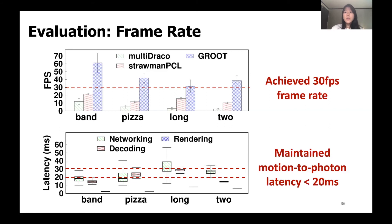Next, the latency breakdown results show minimum, average, and maximum values for each component. Decoding is no longer the bottleneck, and the rendering latency remains well below the motion to photon latency of 20 milliseconds. These results prove that GROOT meets the system requirements mentioned earlier. We also note there is still room for improvement to handle fluctuation in network latency.